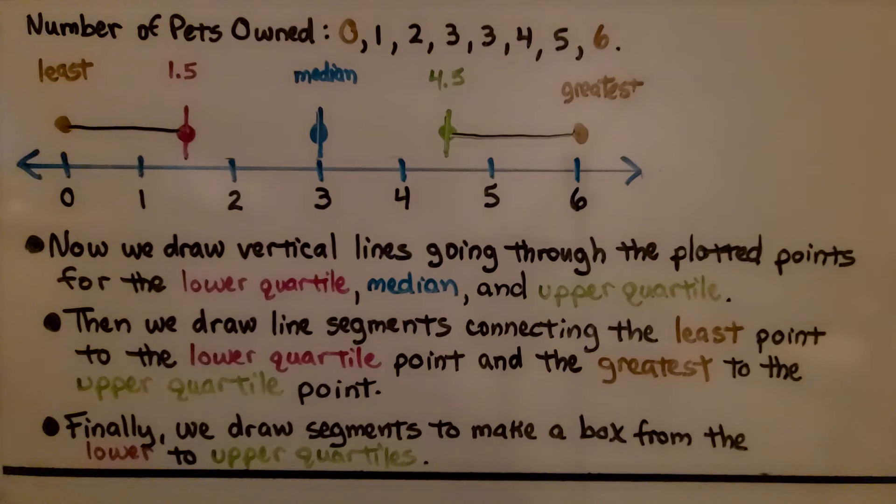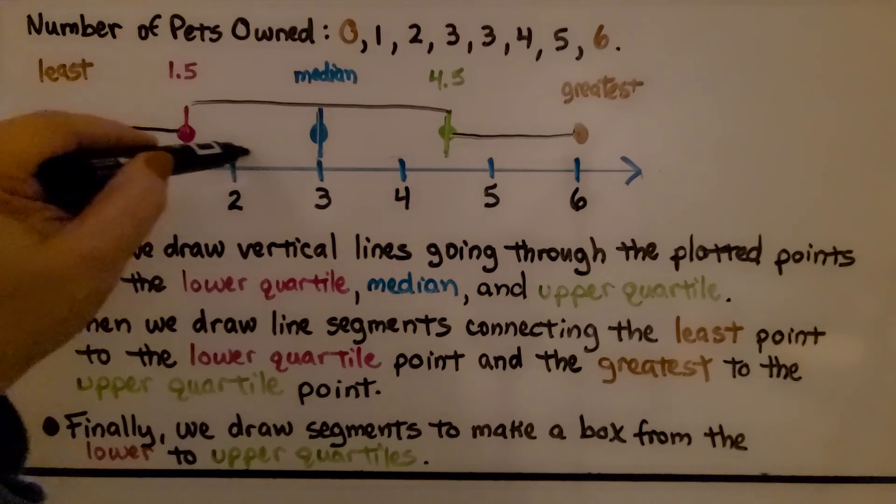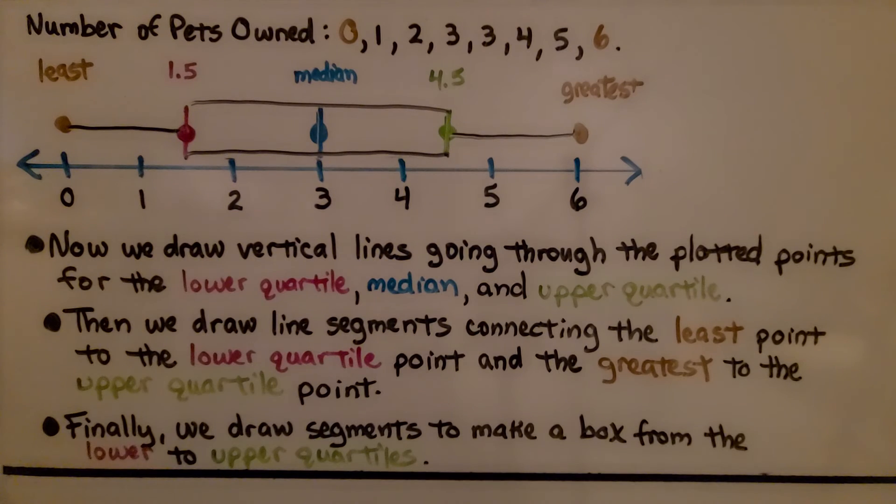Finally, we draw segments to make a box from the lower to upper quartiles. Here we have our box and whisker plot.